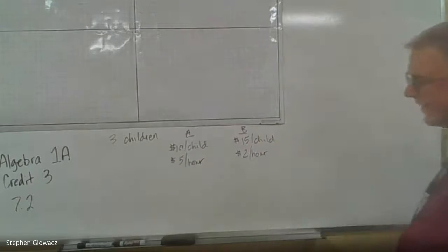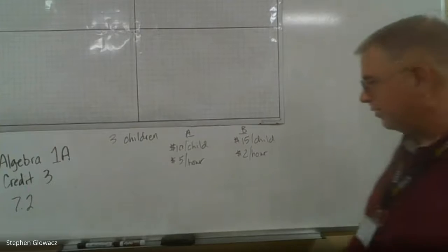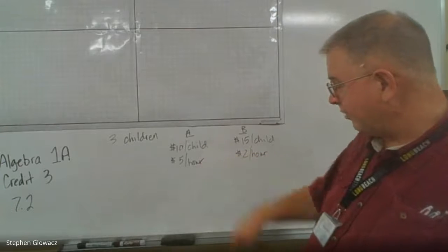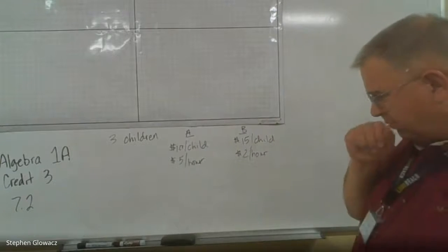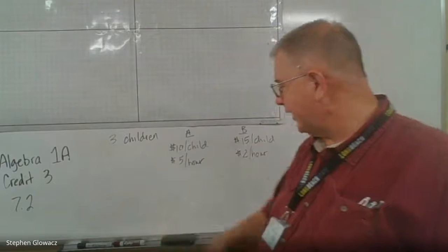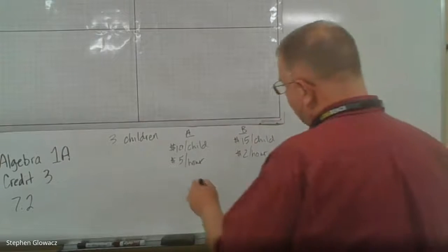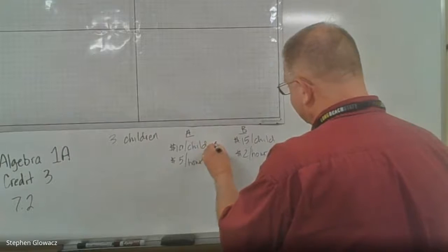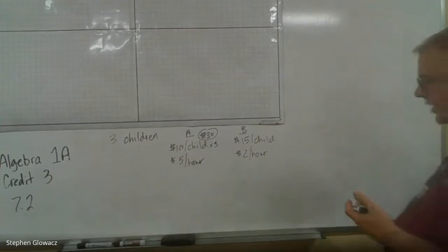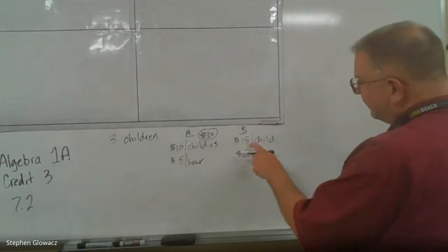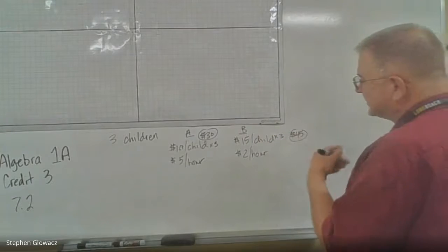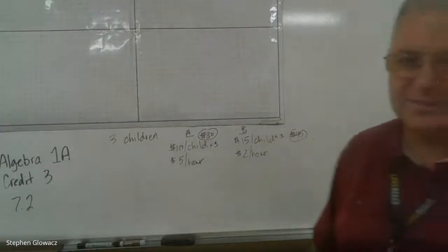It might sound like we have two different variable amounts because we have two different 'per' amounts — $10 per child and $5 per hour. But we know what the charge is for the children because we know there are three. Babysitter A is $10 per child times three, that's $30 — a fixed amount. Babysitter B is $15 per child times three, which is $45. So what sounds like a variable amount is actually a fixed amount.